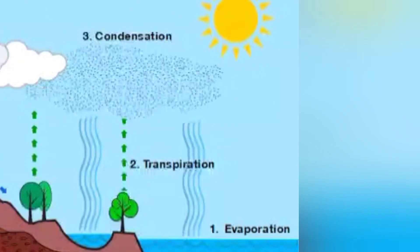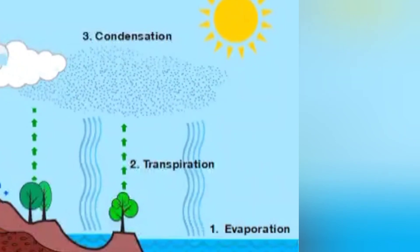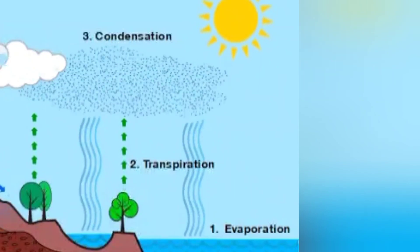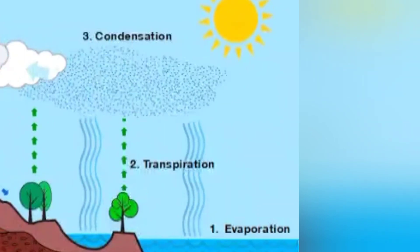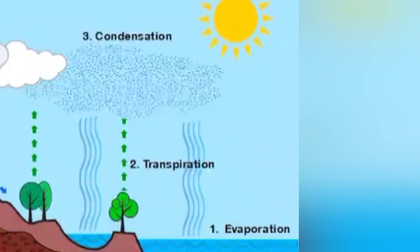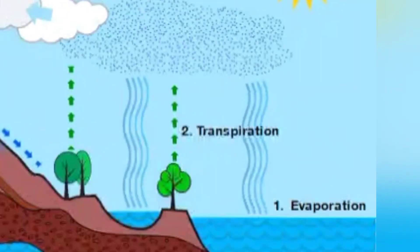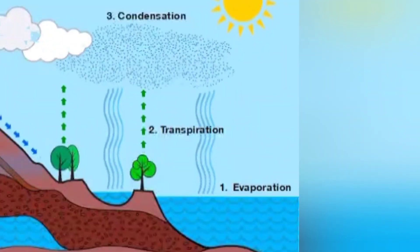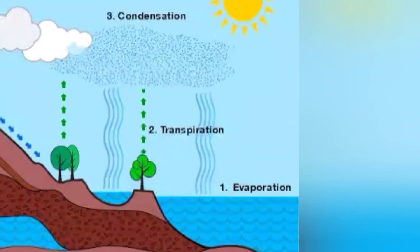As the water vapor goes higher, it cools and condenses. Condensation means the process of vapor turning into water on cooling. This water vapor condenses, forming very fine droplets of water. These droplets are so small and light that they float in the atmosphere and form clouds.